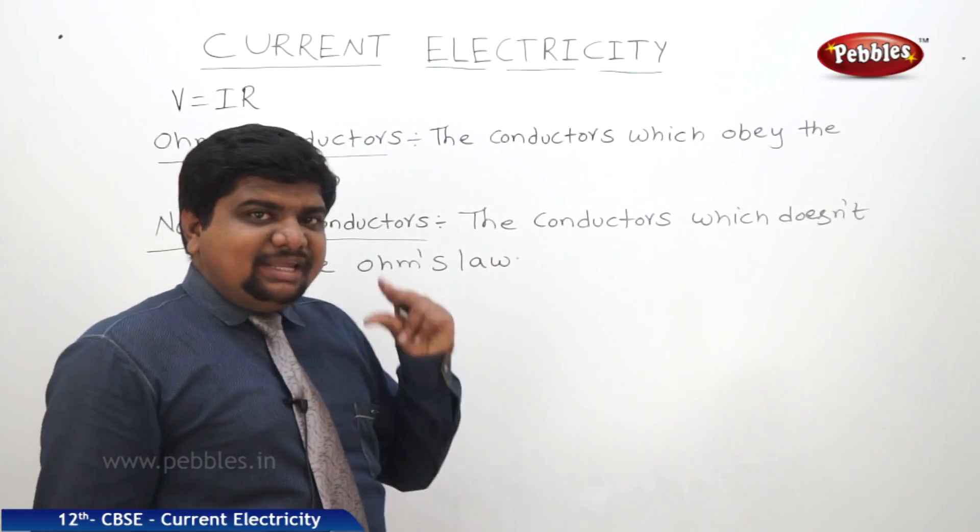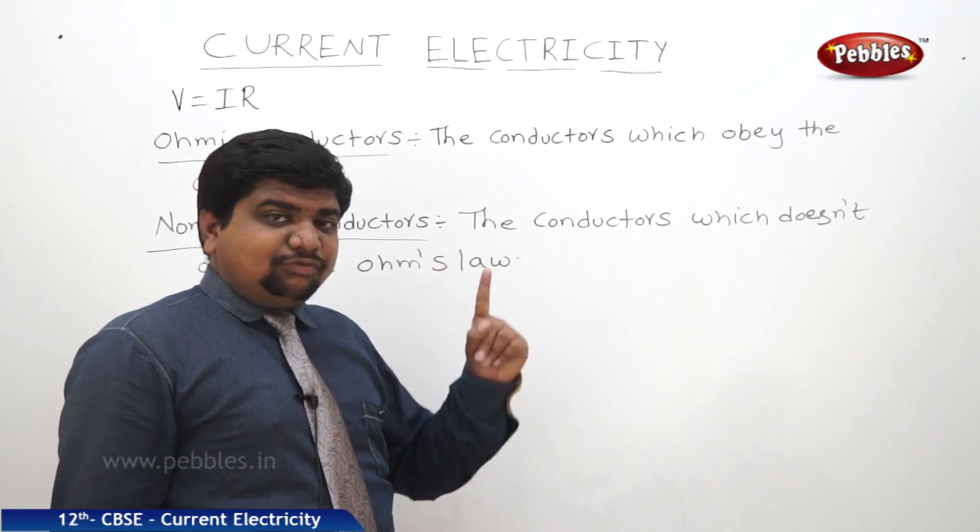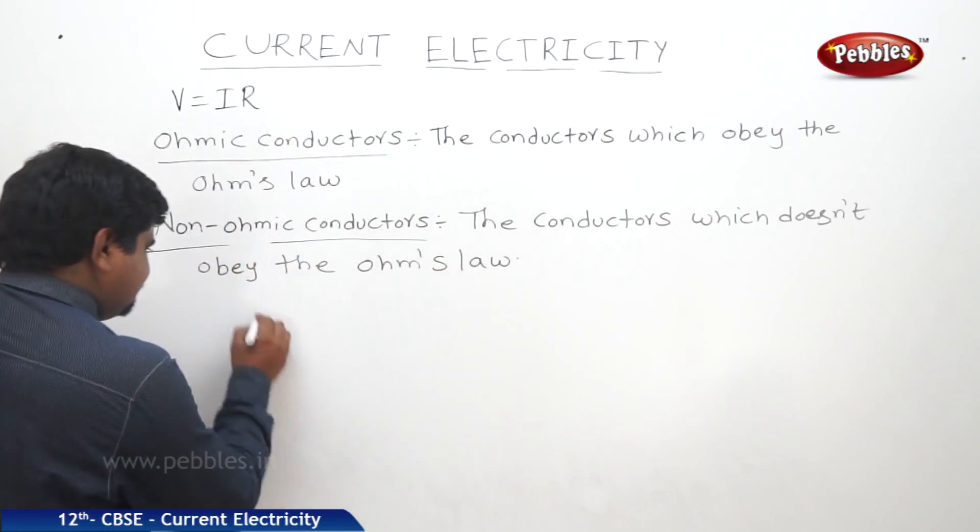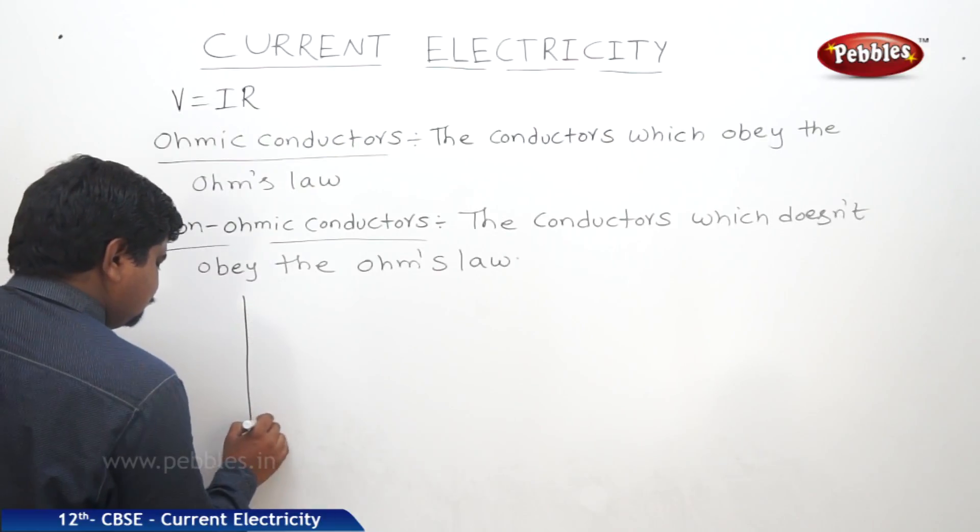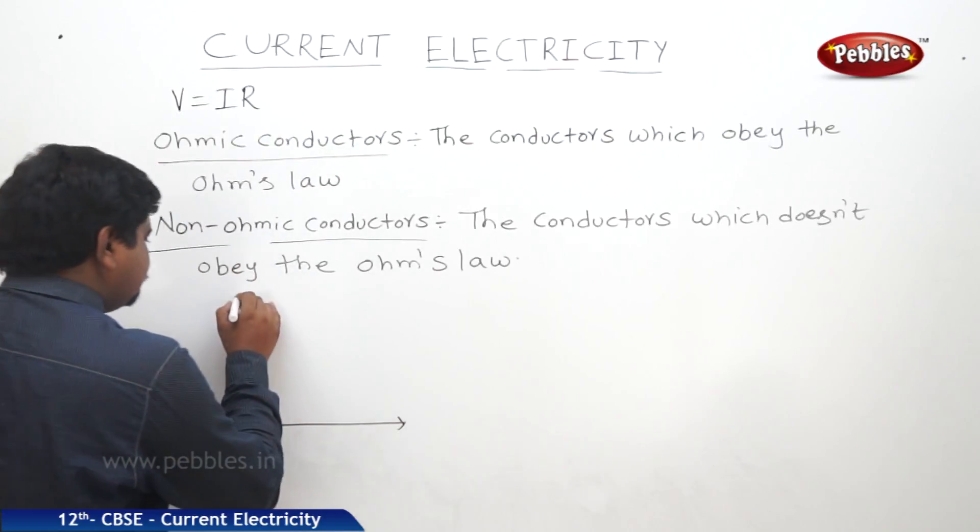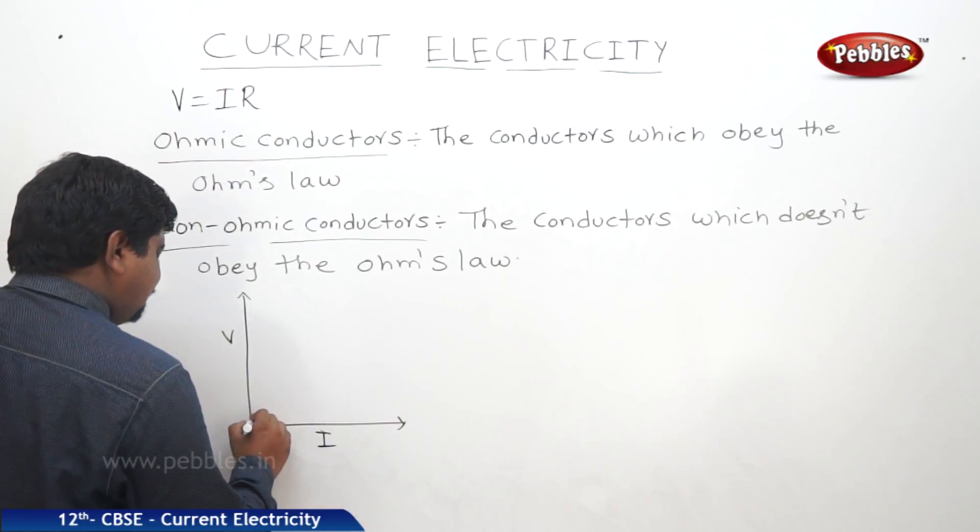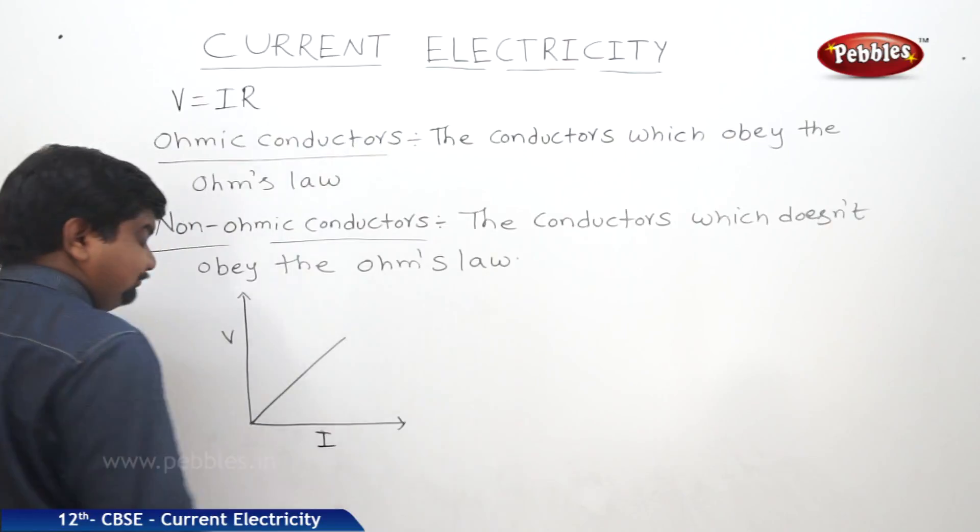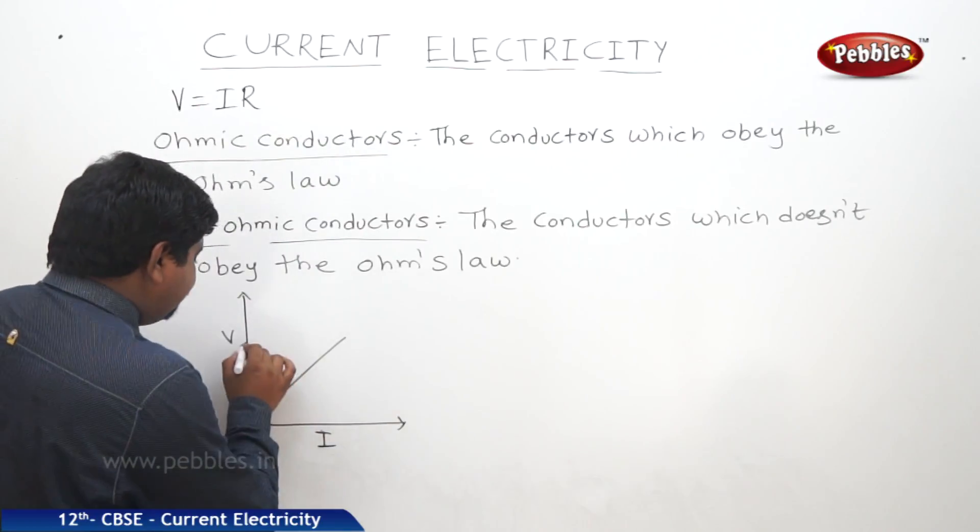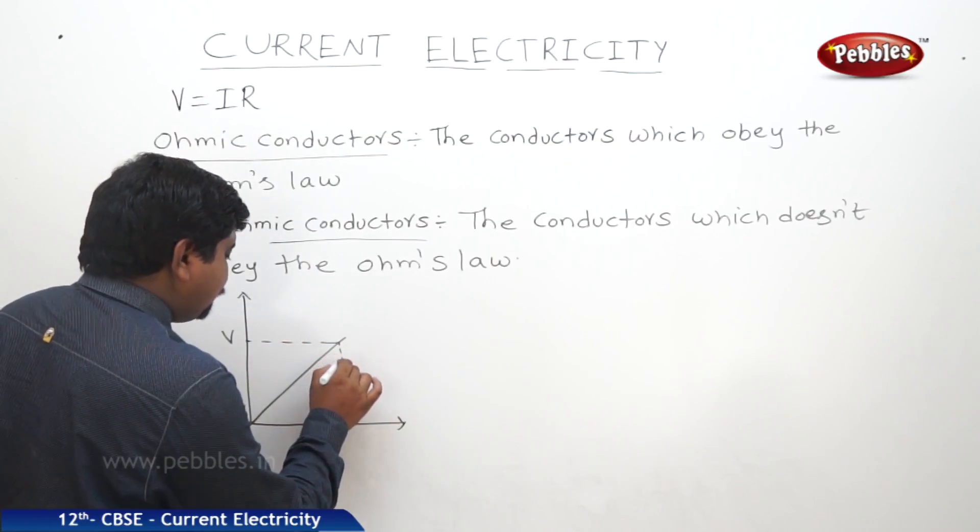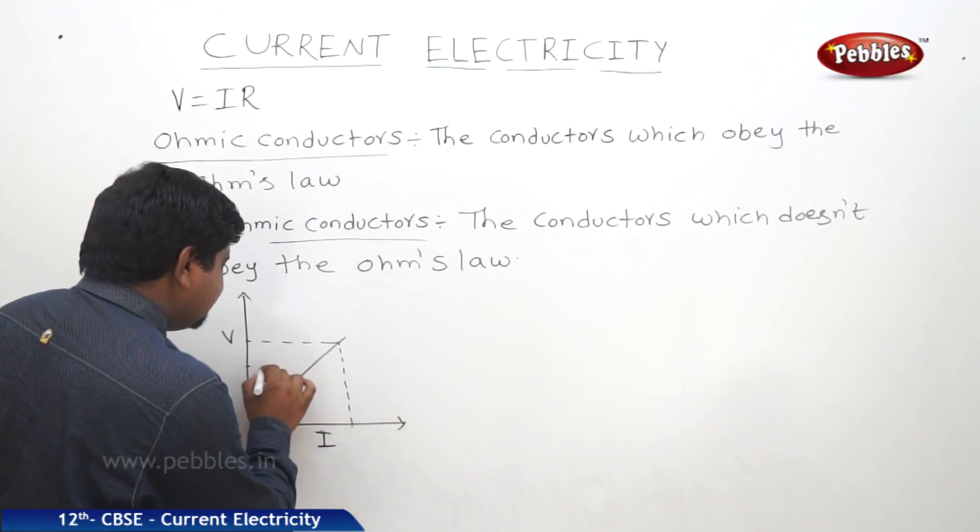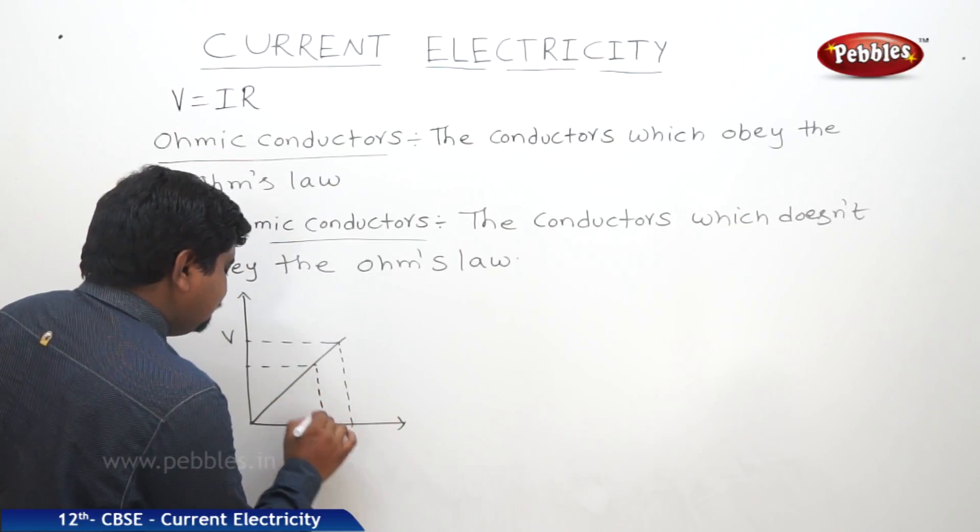If any conductor or any material obeys the Ohm's law, its V by I graph is like this. Always a straight line passes through the origin. The slope of this V-I graph at any given points will give the resistance for that given voltage and given current.